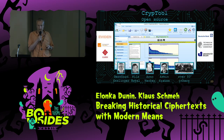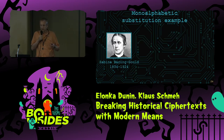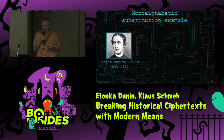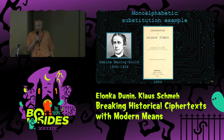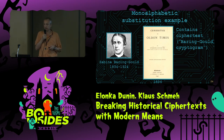Cryptool was developed by a team of over 50 people. Some of these are very active in the field, so I know them well. It's a tool I use quite often. Let's now look at another example of a monoalphabetic substitution cipher — the so-called Baring-Gould cryptogram, because a British man named Sabine Baring-Gould in the 19th century created this, wrote a book, and in this book a ciphertext is contained.